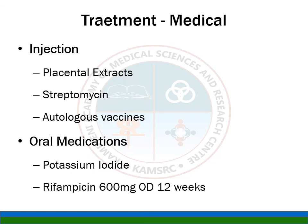Additional topical agents include ethinyloestradiol in arachis oil 1:10,000, liquid paraffin nasal drops to soften crusts, chloramphenicol or streptomycin nasal drops, and Mandl's paint — a solution of iodine 1.25%, potassium iodide 2.5%, peppermint oil, and 90% alcohol in glycerine, where glycerine moistens the mucosa and prevents drying. Injectable treatments include placental extract injections, streptomycin injections into the floor and lateral wall of the nose, and autologous vaccines. Potassium iodide orally and rifampicin 600 mg once daily for 12 weeks have also been used.